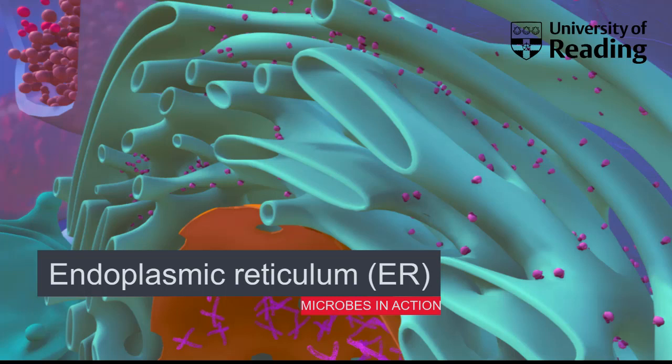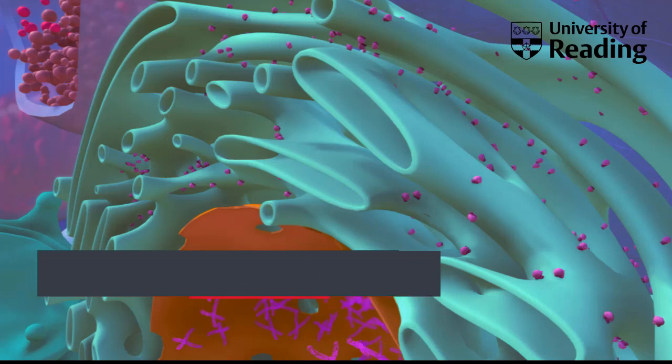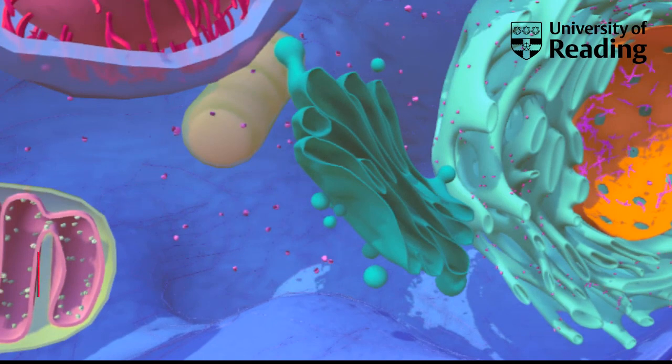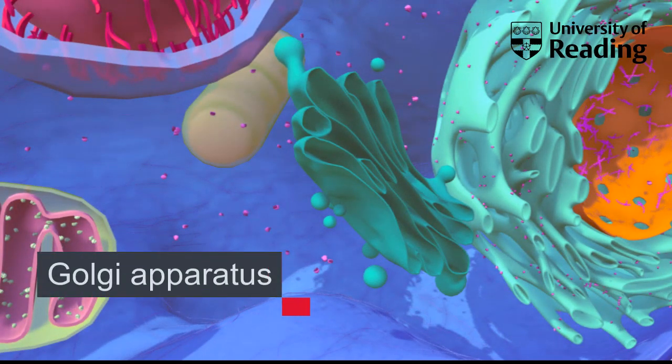Near the nucleus, the cisternae are flattened, sac-like discs that are studded with ribosomes, giving it a rough appearance. The ribosomes translate mRNAs and insert the newly made proteins into the ER membrane or release them into the inside of the ER. These proteins enter the secretory pathway and are passed to the Golgi apparatus, which is a bit like a sorting office in the cell, making sure proteins go to the correct place. This process is called intracellular trafficking.